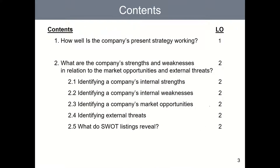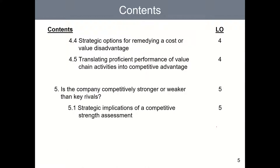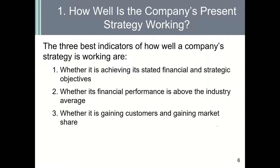Our first learning objective is to identify indicators or measures that reflect how well a firm's strategy is working. Here are the three best indicators. A way to determine if a company's strategy is working is to evaluate if the company has met its financial and strategic objectives. Meeting both leading and lagging objectives provides some indication that a company's strategy is working. However, these internal objectives are mainly set by managers and are subjective — they do not tell us how well a company's strategy is working against other competitors.